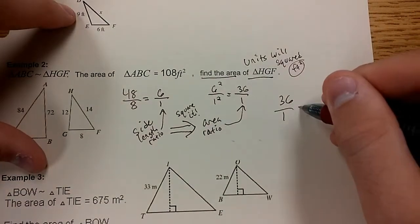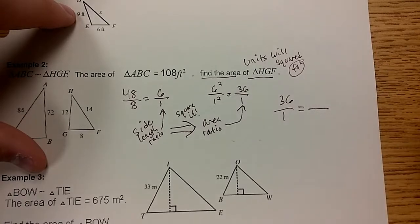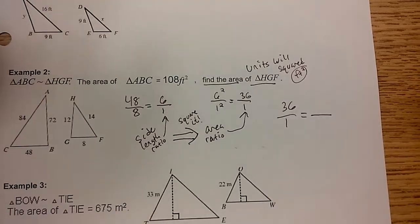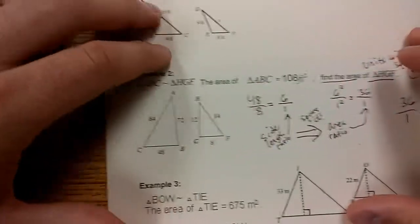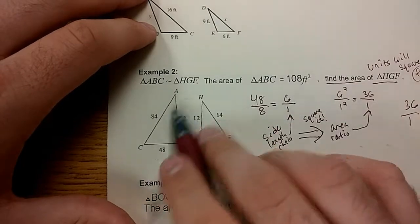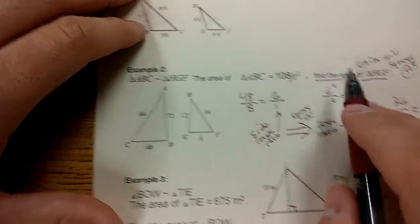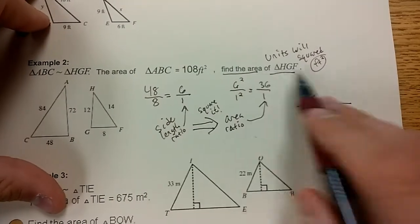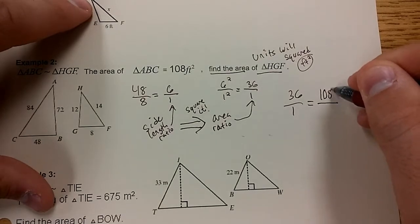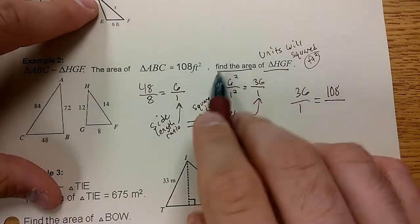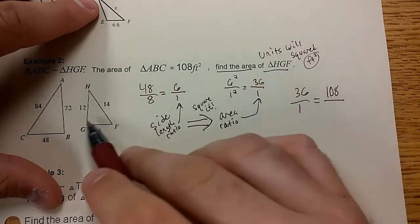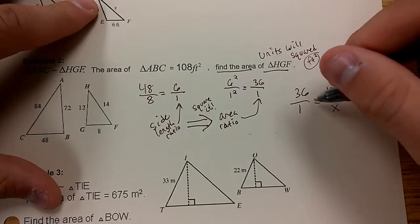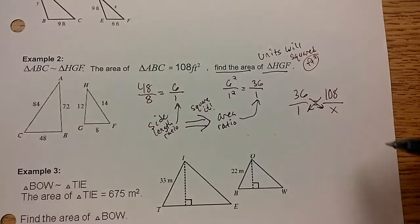Now that you have this, you can find that missing area. Take your area ratio, 36 over 1. Set it equal to another ratio. You have area that's given to you, 108 square feet, and you have a missing area, which we'll call X. ABC is the larger triangle, so that means the area should go with the larger number here, which is 36. The area of the larger triangle, 108, goes to the larger number, 36, on top. The smaller triangle, the area is unknown. HGF, we don't know what that is. That is the smaller triangle. That goes with the number 1, the smaller number, X. Cross-multiply and solve, as you would any other problem.